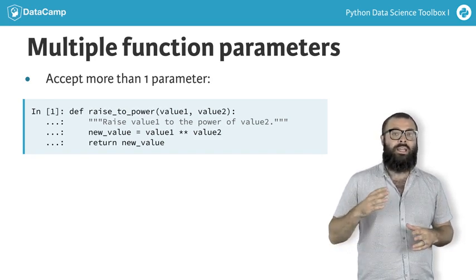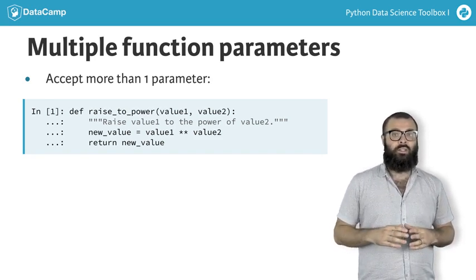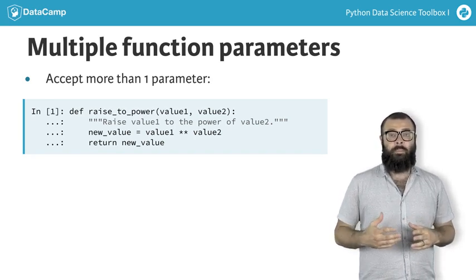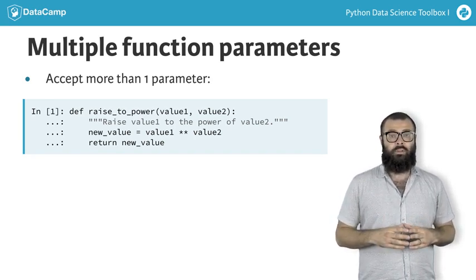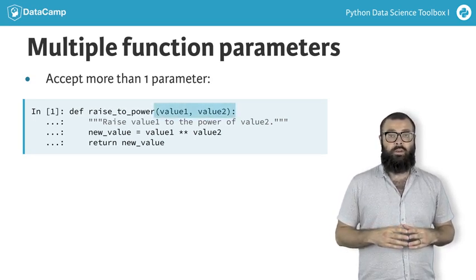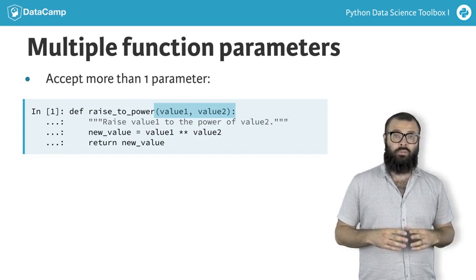You should also change your function name and docstrings to reflect this new behavior. Raise to power is an appropriate function name. Notice that there are now two parameters in the function header instead of just one, value one and value two.